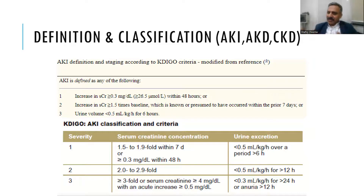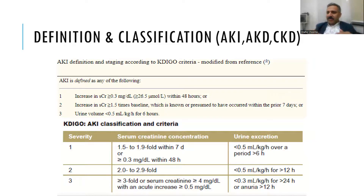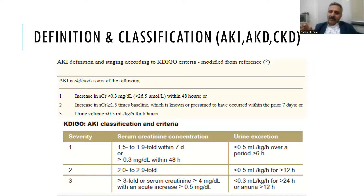Stage three is when the rise is more than three-fold, or at any point creatinine is more than 4 mg/dL, and urine output is decreased to less than 0.3 mL/kg/hour for more than 24 hours. The most important information needed to define AKI is the baseline creatinine. You need to see a certain increase, but you must have a baseline. If baseline creatinine was 1.5 and it rises to 1.8 due to gastroenteritis, that 0.3 mg/dL rise is Stage 1 AKI. This classification is important for research, severity, and prognosis.